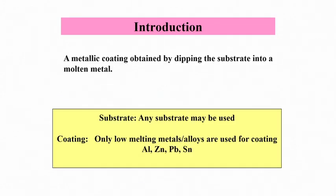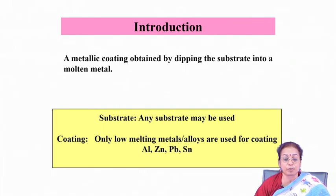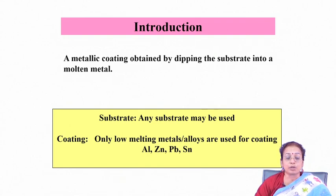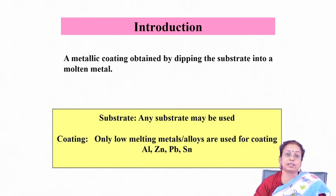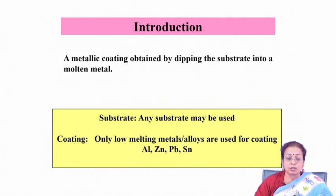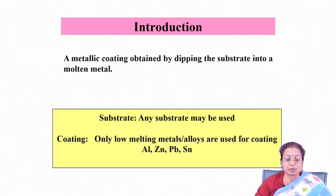As the name implies, hot dipping is a technique or series of techniques applied for development of metallic coatings, obtained by dipping the substrate into the molten material which you are going to deposit. Usually the substrate may be anything, but should have a very high melting temperature, while the coating should have quite a low melting temperature. The substrate's microstructure should not get degraded during hot dipping. Usually the substrate may be steel, titanium, or their alloys.